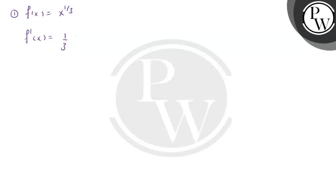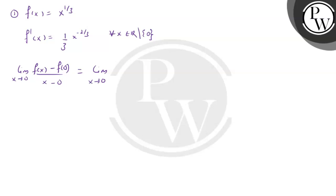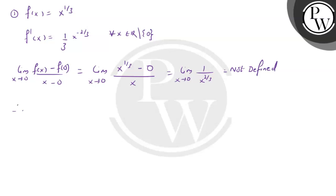Now let's analyze differentiability. For f(x) equals x^(1/3), the derivative is (1/3)x^(-2/3) for every x in ℝ except at zero. Checking differentiability at x equals zero using the definition: the limit as x tends to zero of [x^(1/3) minus 0] divided by [x minus 0] equals the limit of 1/x^(2/3), which does not exist. Therefore, f(x) is not differentiable at x equals zero.